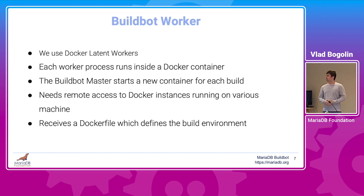Instead of the classical approach where a BuildBot worker is always running on a dedicated physical machine, we use Docker latent workers, so the actual BuildBot worker process runs inside a Docker container. The BuildBot master, which has remote access to various Docker instances on different machines, builds a Docker image specified by a Dockerfile, then starts a Docker container — repeated for each build. During container startup the BuildBot worker process starts and connects to the build master. When the build finishes, the Docker container is stopped. In this way, BuildBot worker processes run only when needed.